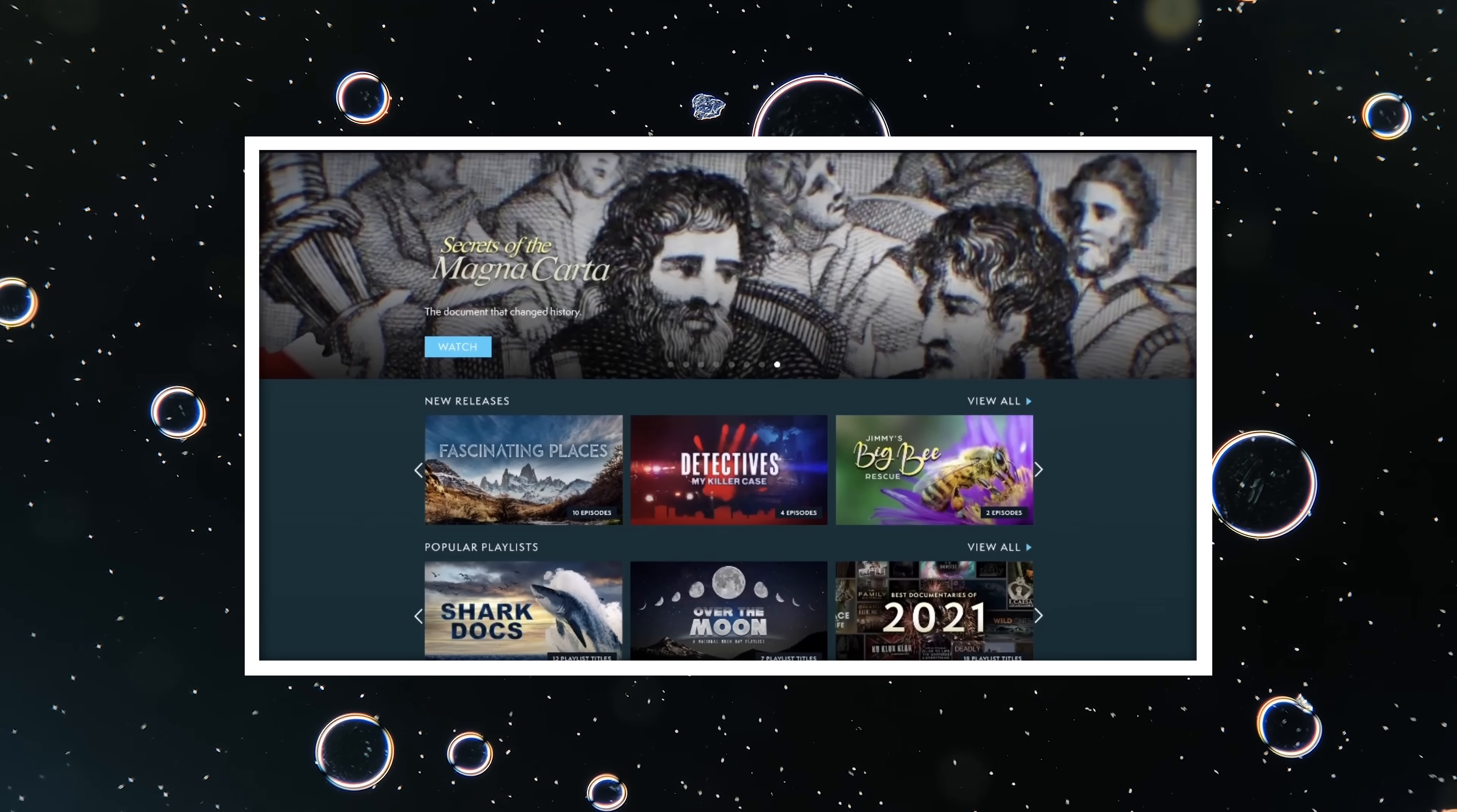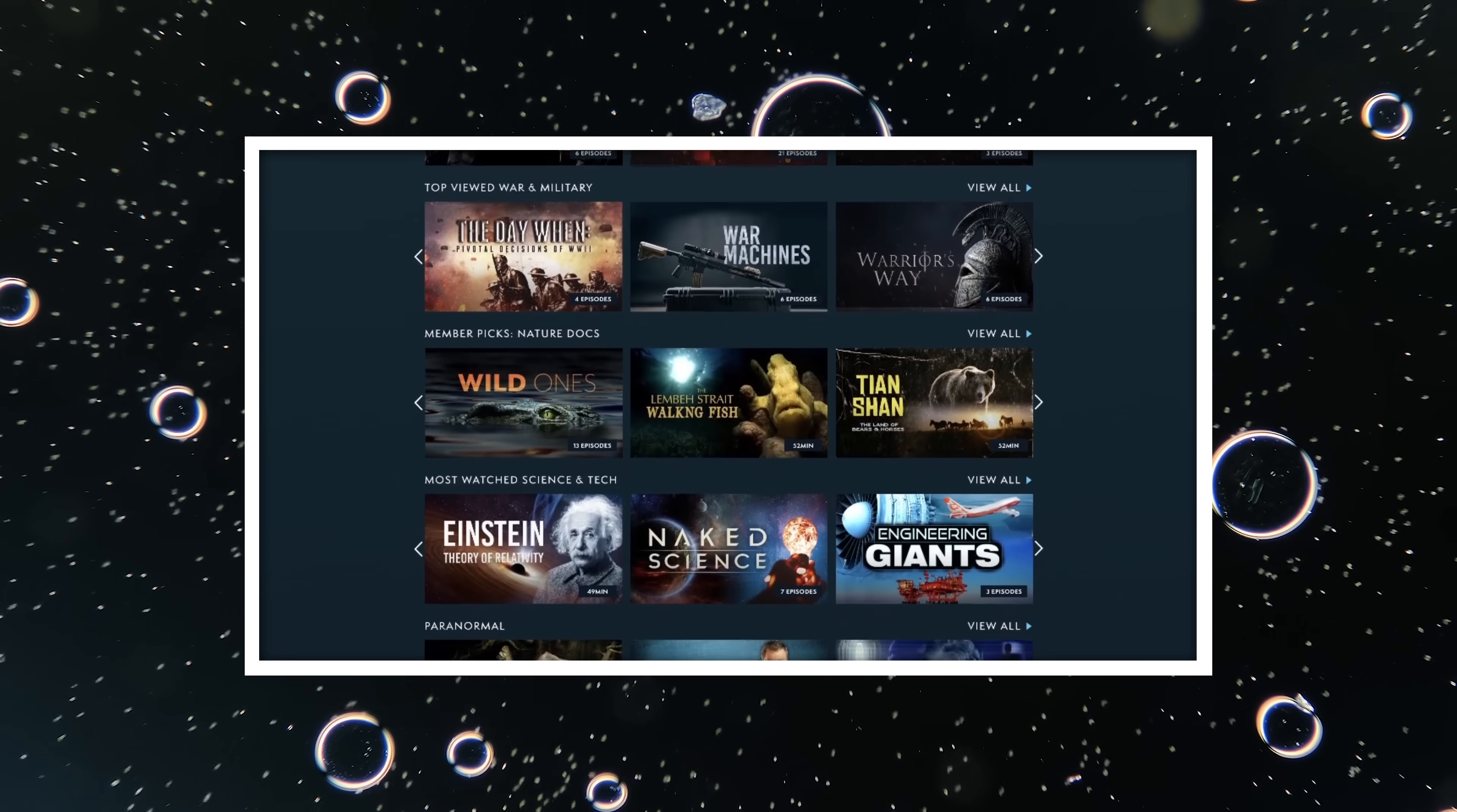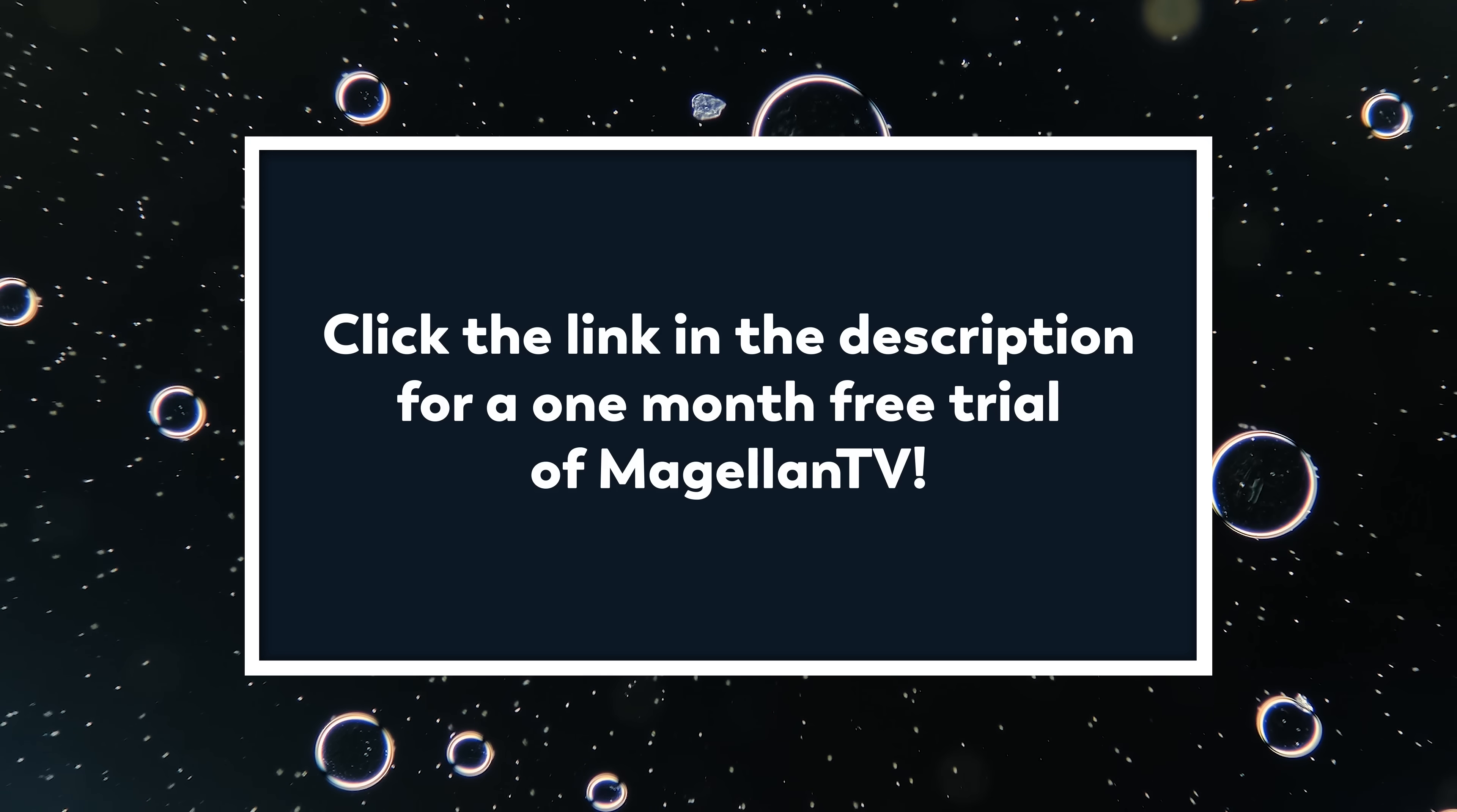MagellanTV is a documentary streaming service founded by filmmakers. It has some of the most in-depth science content available anywhere, covering space, technology, nature, and more. 15 to 20 hours of new content is added every week, with a growing collection of 4K high-definition content for no additional cost. So you will never run out of something to watch. And there are no ads. MagellanTV can be watched anytime, anywhere, on your television, laptop, or mobile device, because it's compatible with Roku, Amazon Fire TV, Apple TV, Google Play, and iOS. Click on the link in the description to get your first full month of MagellanTV for free.